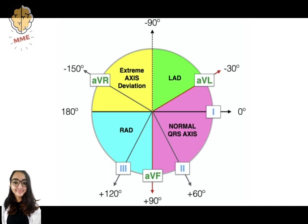Right axis deviation involves the direction of depolarization being distorted to the right, that is between 90 degrees and 180 degrees. The most common cause of right axis deviation is right ventricular hypertrophy. Extra right ventricular tissue results in a stronger electrical signal being generated by the right side of the heart.